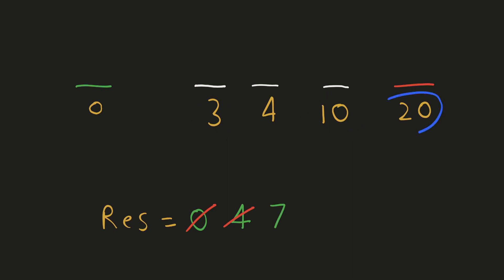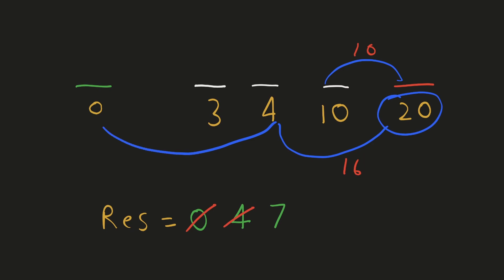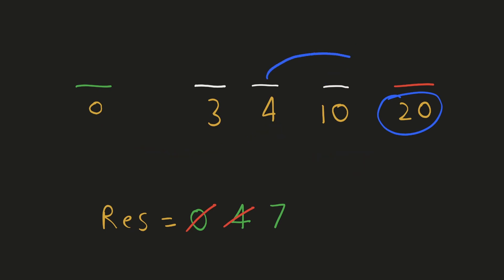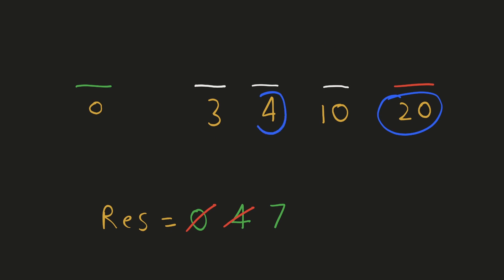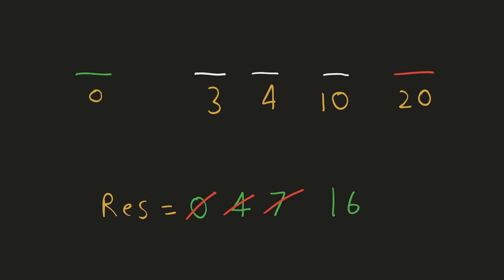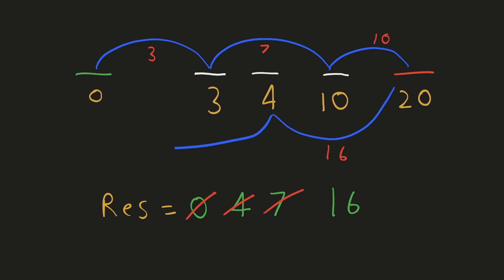Similarly, for stone 20, if we jump there directly from 10, then on the return journey we'd have to jump from 20 to 4, giving a distance of 16. And if we jump to 20 from 4, the distance would also be 16. So in either case, there has to be a jump between these two alternate stones of distance 16. We update our answer to 16. This is one of the paths we can take, and 16 will be the maximum jump distance — hence it will be our answer.